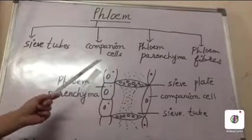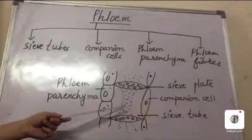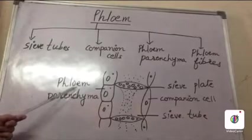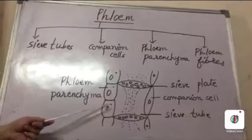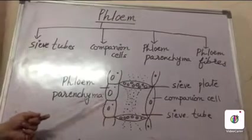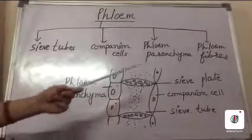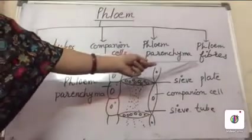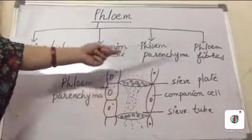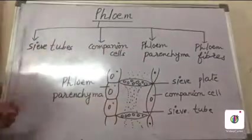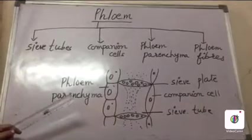Both the sieve tube and companion cells help in the transport of food material. Next is the phloem parenchyma. These cells are living cells which help in the transport of food. They also help in the storage of food. Finally, talking about phloem fibres — these phloem fibres are dead cells of the phloem. They are long, flexible and provide mechanical support to the plant.